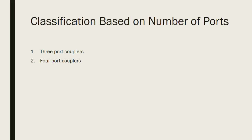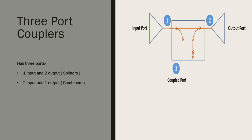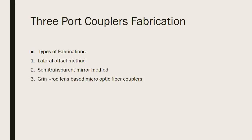Couplers can also be classified based on their number of ports — they can be three-port, four-port, or even more. Three-port couplers can be configured in two ways: one input and two outputs when they work as splitters, and two inputs and one output when they work as combiners. There are three methods involved in the fabrication of a three-port coupler: the lateral offset method, the semi-transparent mirror method, and the graded rod lens-based micro-optic fiber coupler method.